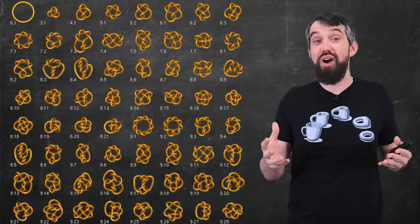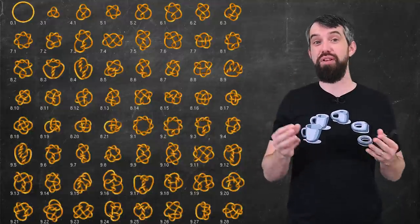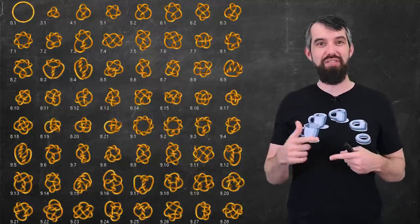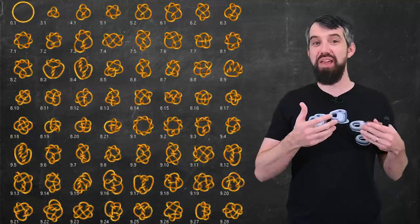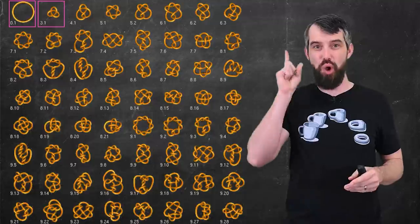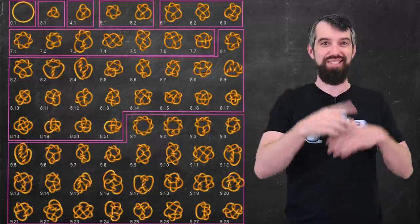Using Reidemeister moves, we can construct a whole table of different types of knots. The idea of this table is it's indexed by the number of crossings in the knot. For example, there's only one knot with no crossings, the unknot.